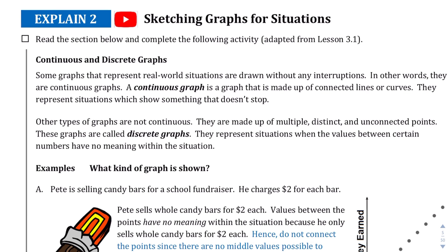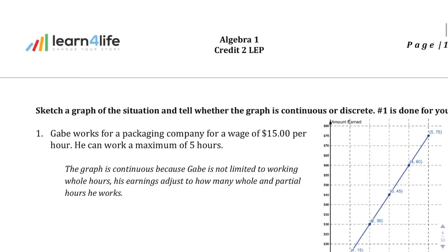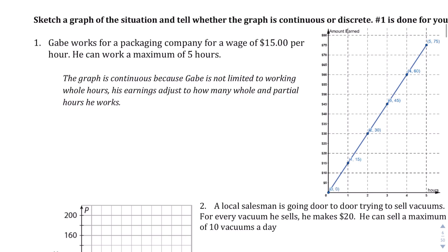Moving on to explain 2. Let's see here. There's nothing to ask there. So we're going to move on to page 12 here. We're told Gabe works for a packing company for a wage of $15 per hour. He can work a maximum of five hours.